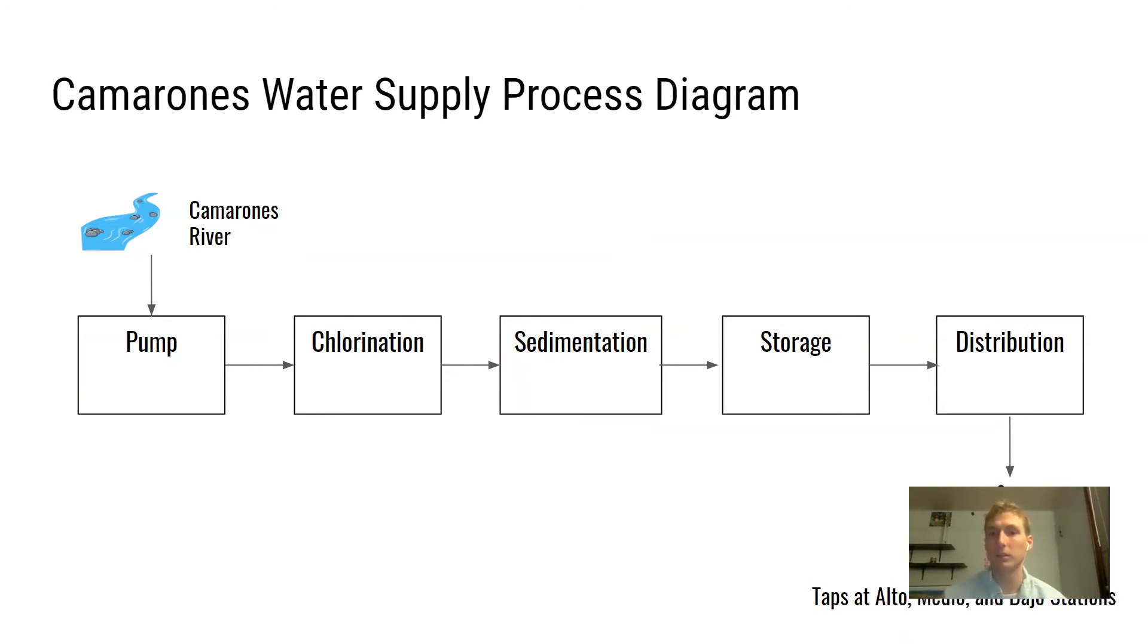Before we dive into some of these individually, we just wanted to show you guys an overview of the Camerones water process as a whole. As you can see, we will be sourcing water from the Camerones River. We will be pumping that water up to the treatment compound, those tanks and cisterns. Then we'll be performing sedimentation in those tanks. Then we will be chlorinating the water for disinfection. That water will be going to a tank that will be used for storage. And then from there, water will be distributed through our piping network to the three source locations in Alto, Medio, and Bajo.